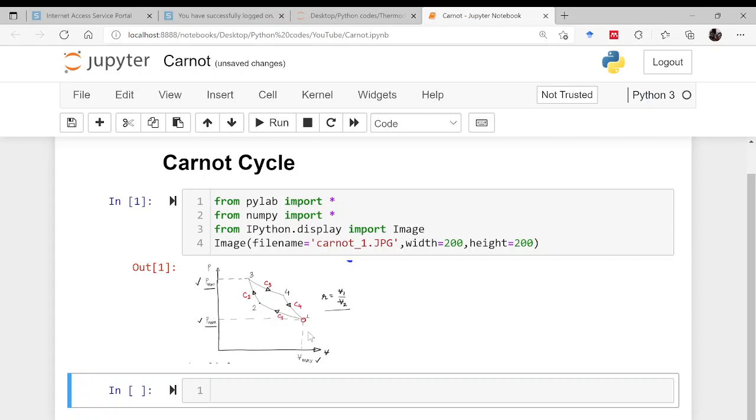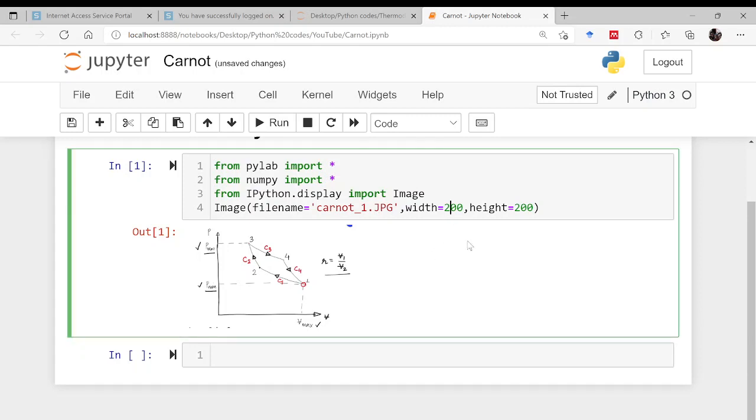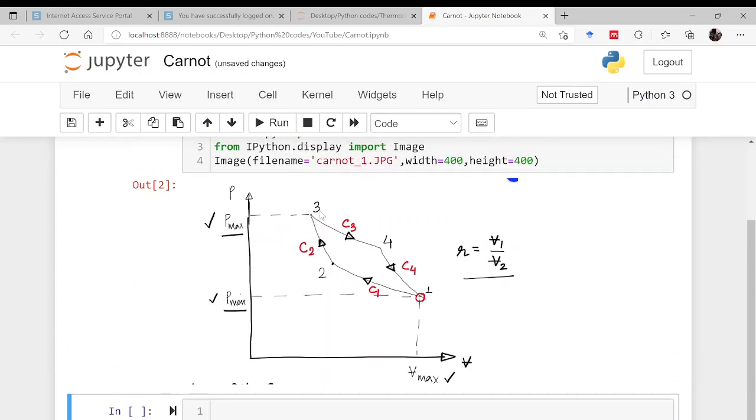This is the same image which I have drawn in the last video to explain you the process of the formulation of the code, that is the algorithm you can say. For better view let us increase the size. So now this is the one. The process 1, 2, 3, 4 is what we are interested in drawing.